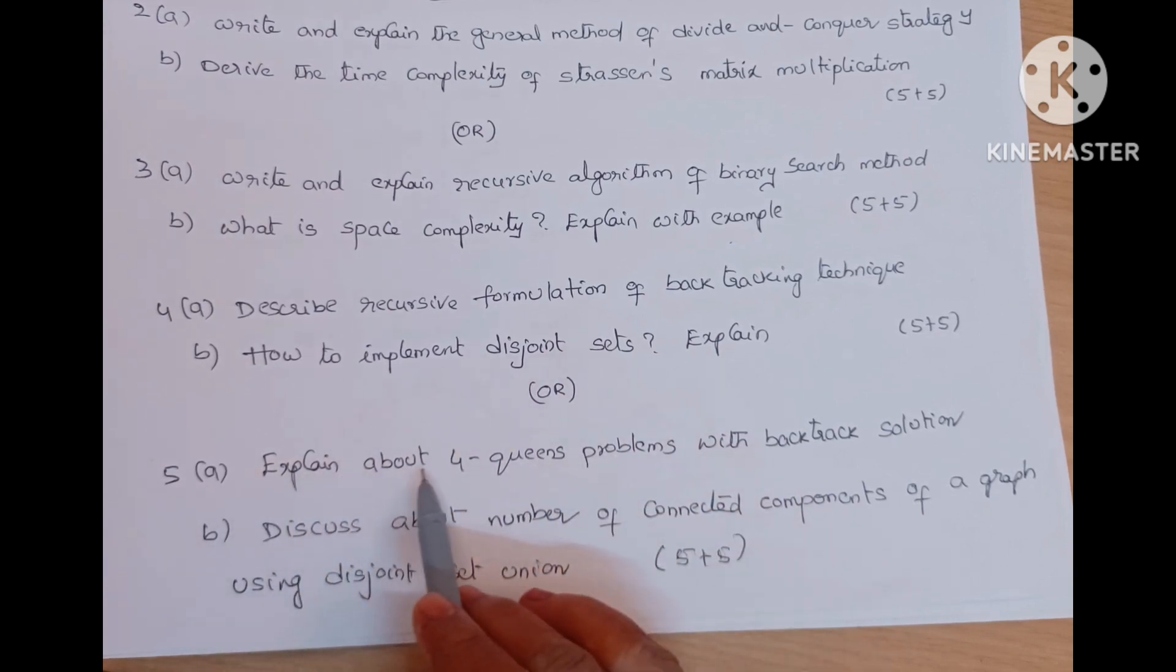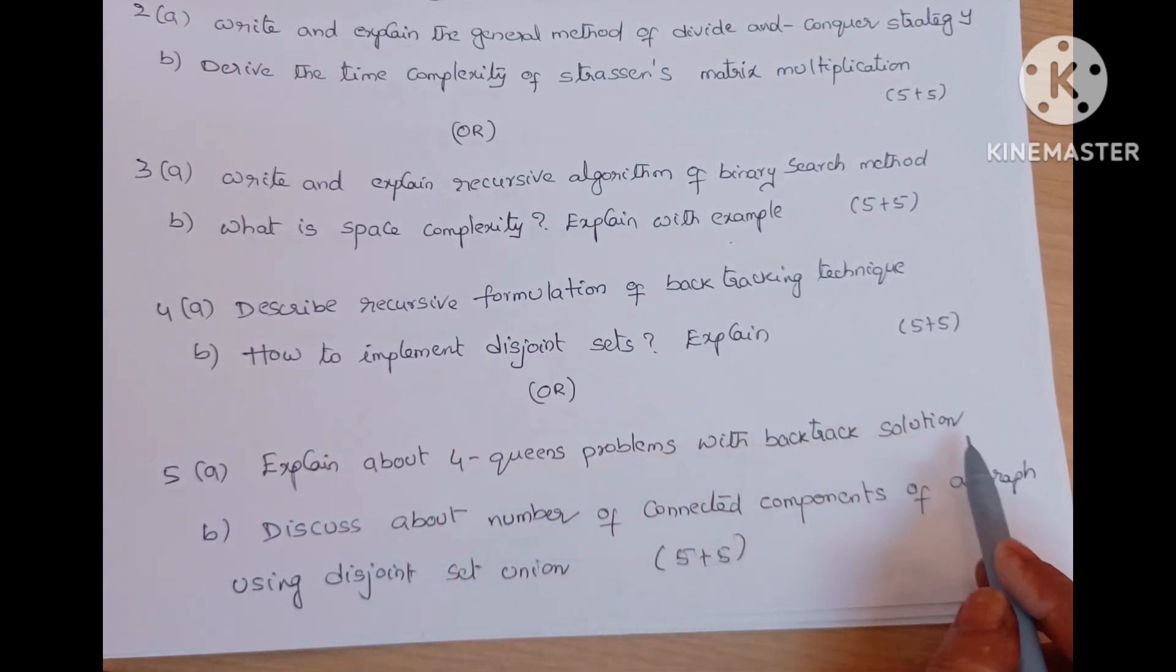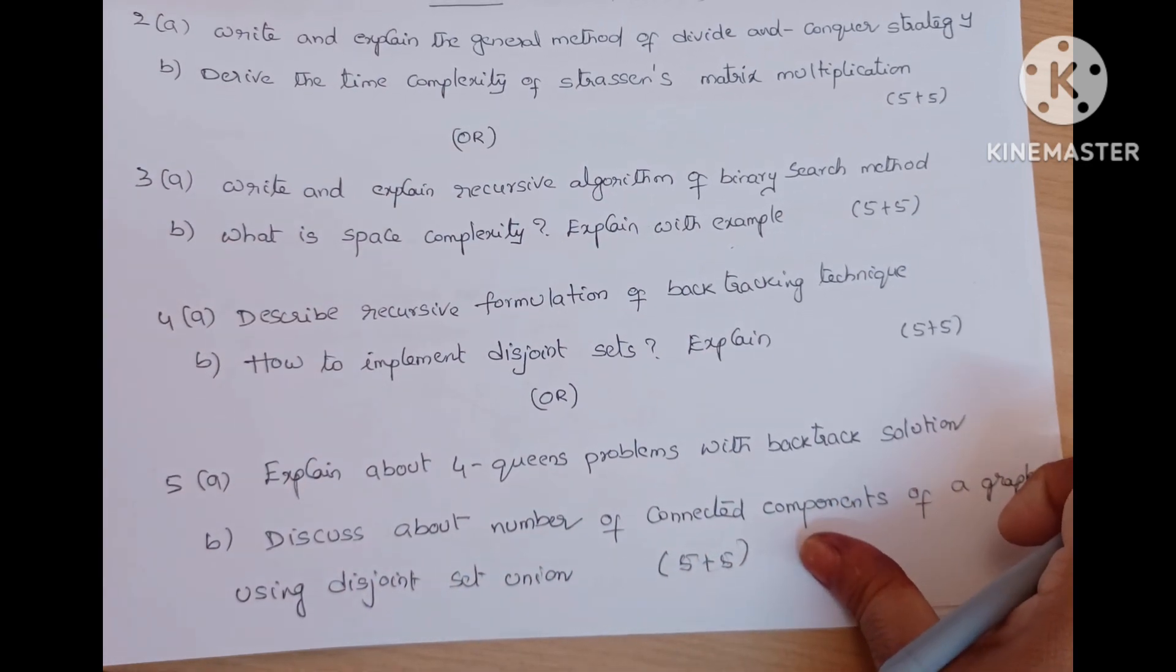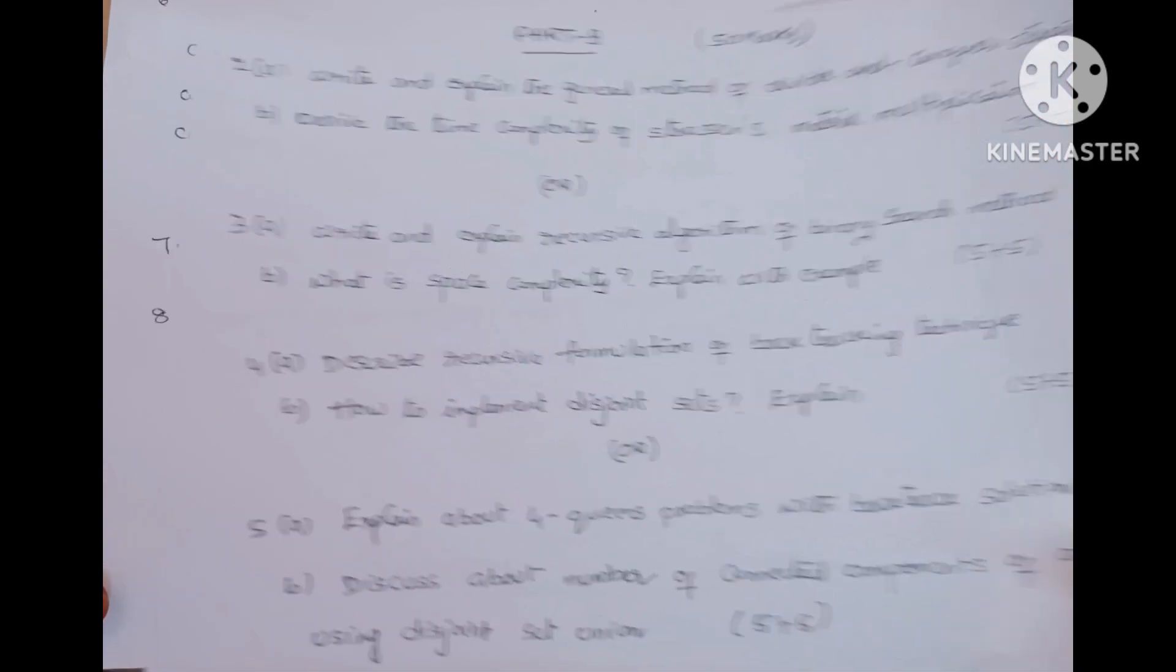Or five A, explain about four queens problems with backtracking solution, five marks question. Discuss about number of connected components of a graph using disjoint set union, five marks questions. These two are coming from unit two.